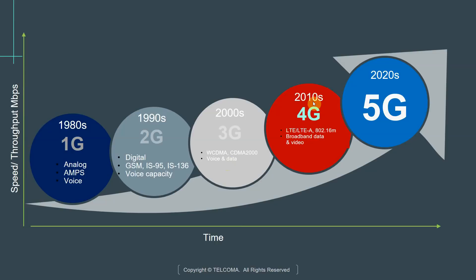Moving on, in the 2010 timeframe, we saw the adoption of the fourth generation of network technologies. As part of this, two standards emerged: LTE and LTE Advanced. There was also 802.16M, which emerged but didn't gain that much traction. The key thing to keep in mind is that the applications motivating 4G were broadband data and video.